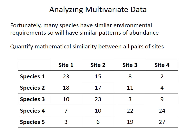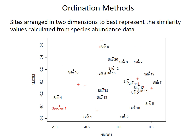They look at Site 1 and Site 2 and come up with a number that quantifies the similarity of species abundances — the abundance of species 1 in Site 1 and Site 2, species 2 in Site 1 and Site 2, and so forth. We get a number for Site 1 versus Site 2, Site 1 versus Site 3, Site 1 versus Site 4, and so on. With those similarity values for all pairs of sites, they can then be arranged in two dimensions so that the distribution of the sites on this plot best represents the actual similarity values calculated from the species abundance data.